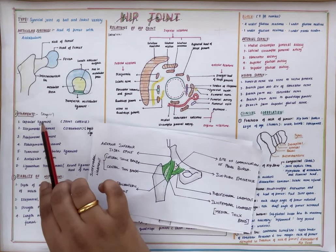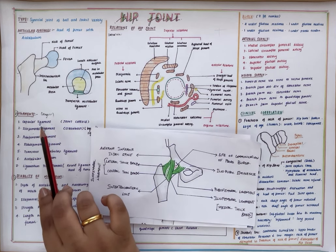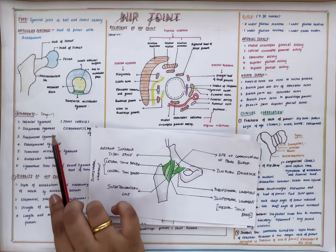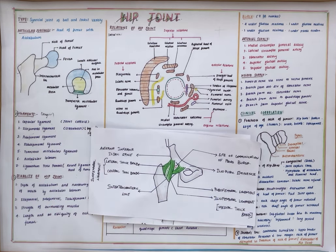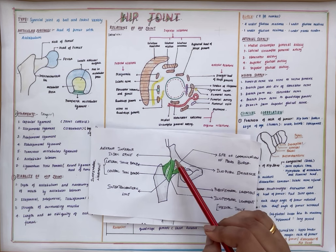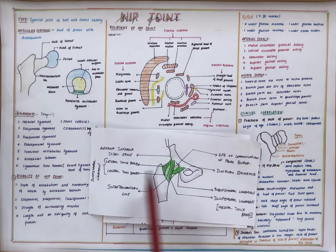The ligaments supporting the hip joint are the capsular ligament, which is also called the joint capsule. We have the iliofemoral ligament, which is the strongest ligament in the body, also called the ligament of Bigelow. The iliofemoral ligament extends from the anterior superior iliac spine of the ilium to the intertrochanteric line of the femur.